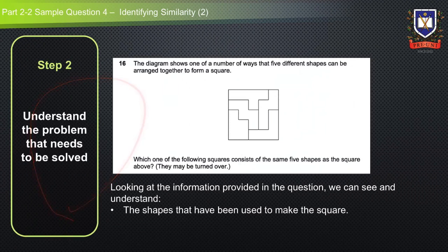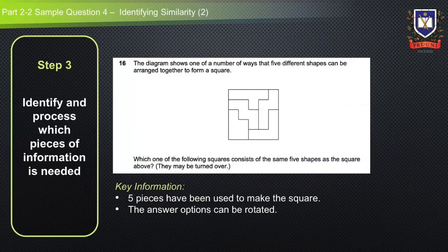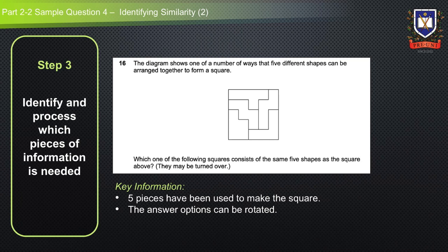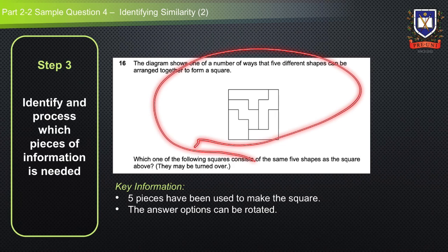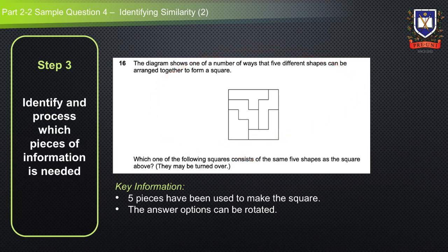Step two is to understand the problem that needs to be solved. Looking at the information provided, we can see and understand the five different shapes used to make up the square. In step three, we need to identify and process which pieces of information are needed. A key piece of information is that five pieces have been used to make the square and the answer options can be rotated. We should also note that the five identical pieces have been used in the answer options.